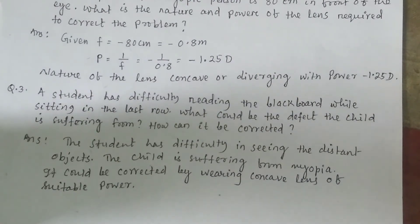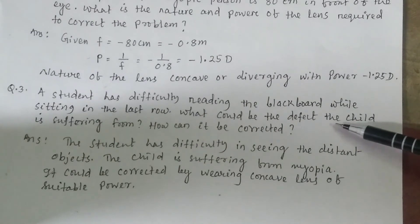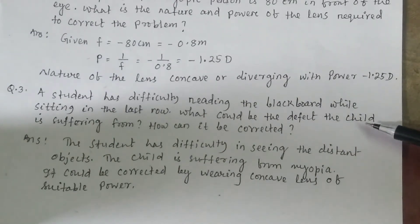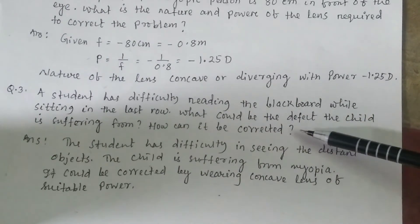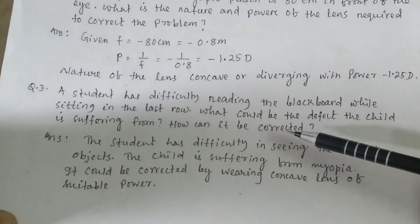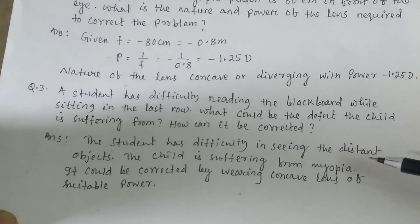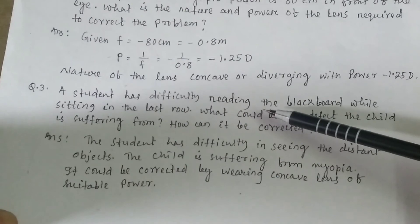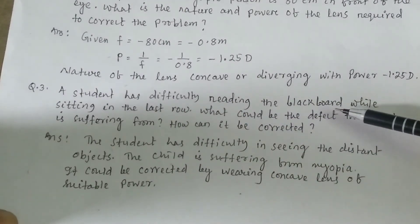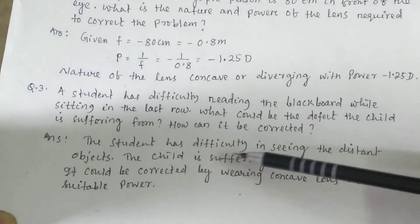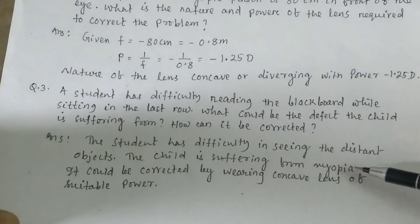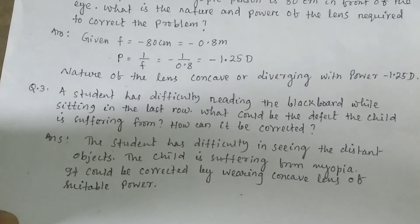A student has difficulty reading the blackboard while sitting in the last row. The student has difficulty seeing distant objects, so the child is suffering from myopia. It should be corrected by wearing a concave lens of suitable power.